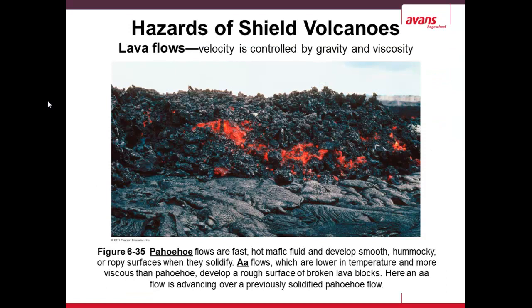Lava flows are classified into generally two types: the fast-moving, hot, mafic fluid called pahoehoe, and the aa flows, which are lower in temperature and therefore more viscous. Aa flows tend to be more chunky and blocky, while pahoehoe flows more quickly. In this picture you can see both types — the pahoehoe underneath is more fluid, and the aa above has more jagged rocks.